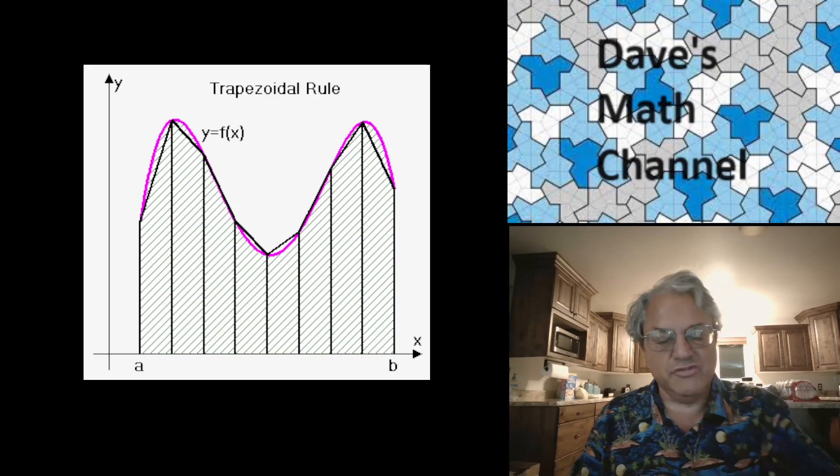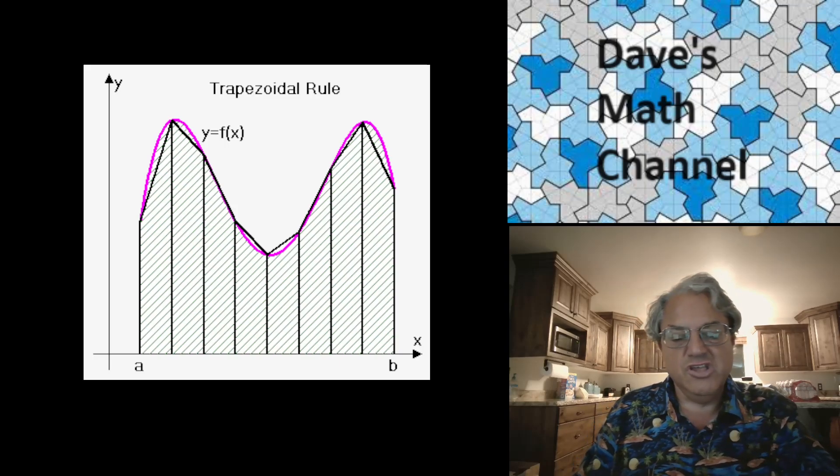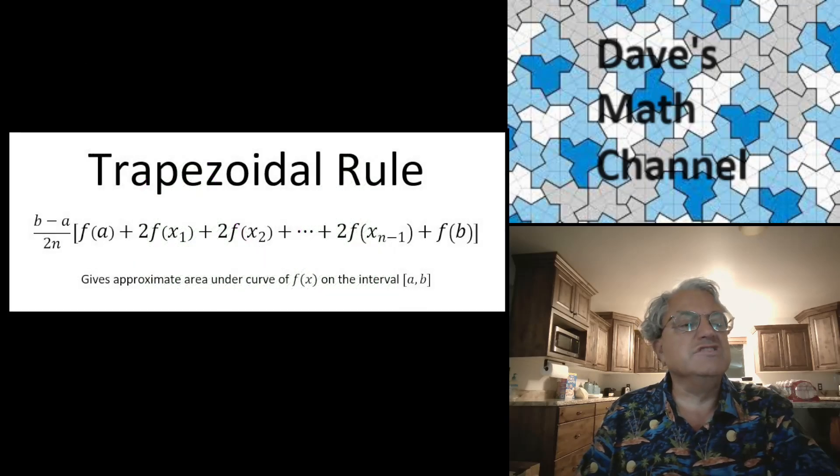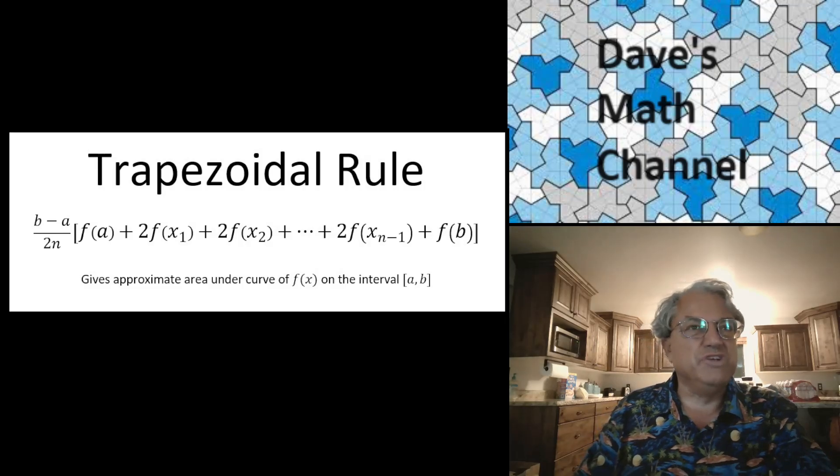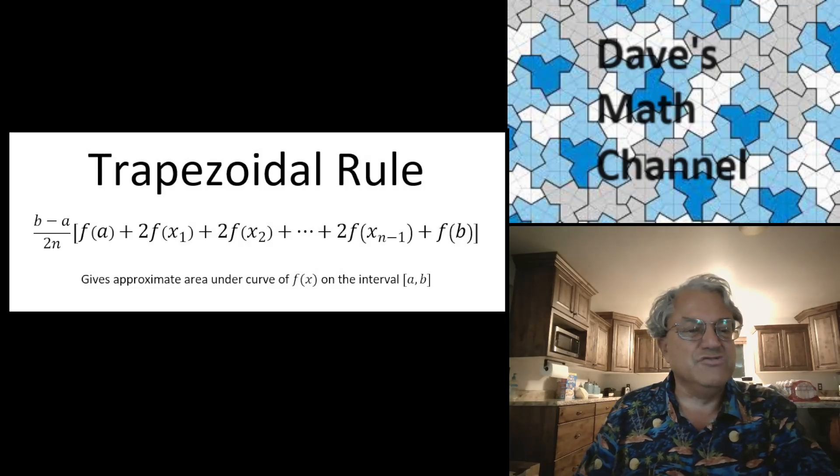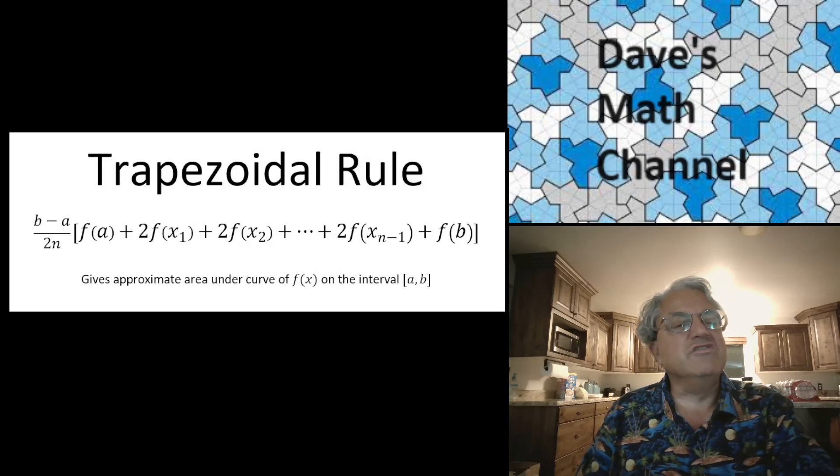You connect the vertices of these bars, giving you a series of trapezoids. And you can use the formula for the area of a trapezoid. And when you do all that, you get this nice formula. So this is the formula. It's probably better to use a formula to draw a picture of the trapezoids. You don't really have to draw the picture as long as you have the formula.